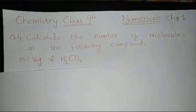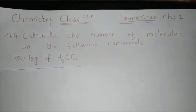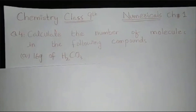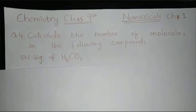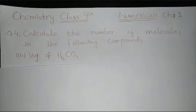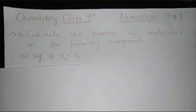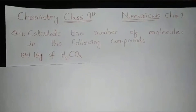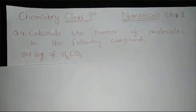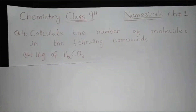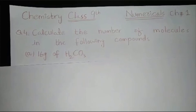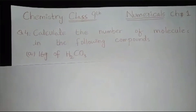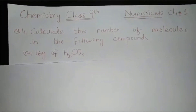Let's start numerical number four: calculate the number of molecules in the following compounds. In this question we have three parts. First we will start with 16 grams of carbonic acid.